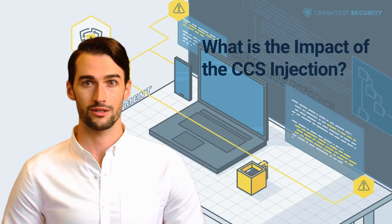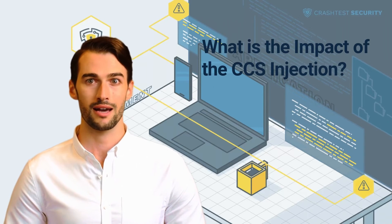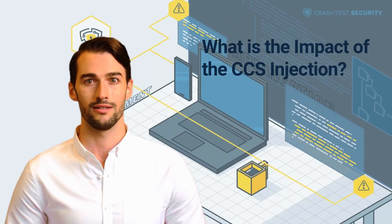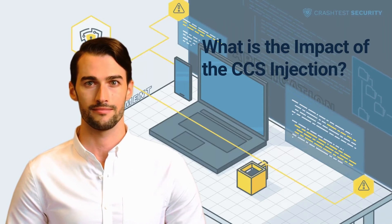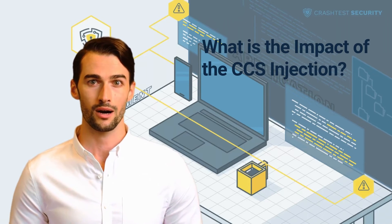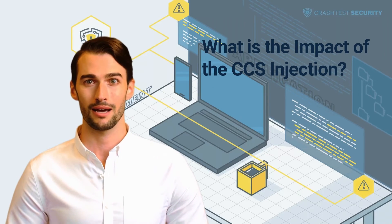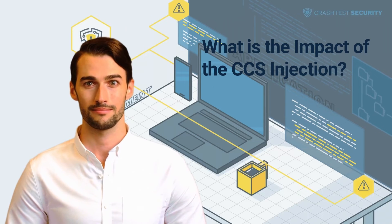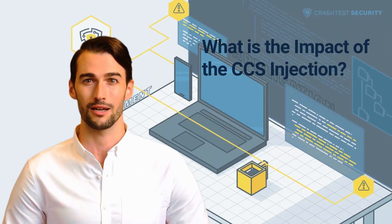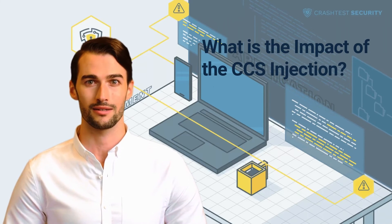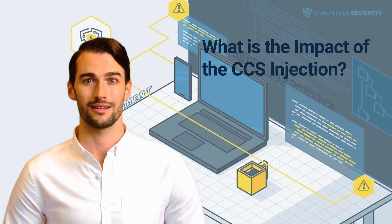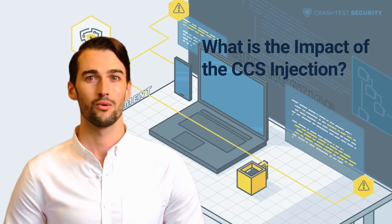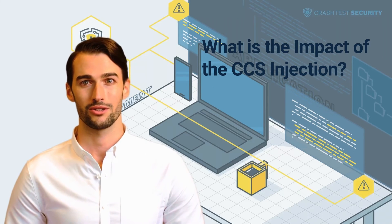Unlike other injection attacks, the CCS injection cannot be used to extract data from clients and servers, meaning any data stored on either side is safe. However, if the injection is successful, it allows attackers to capture and decrypt packets in transit between parties — such an injection could potentially expose or corrupt sensitive data. This includes authentication and session details, allowing attackers to hijack a session. It could also include personal, financial, or health data, and sensitive communications.